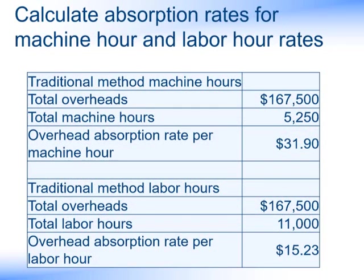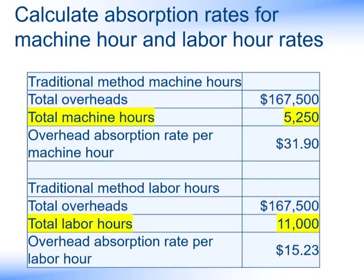Let's calculate our absorption rates using machine hours and labour hours. We take our total overheads for both cases — machine hours and labour hours — and in each instance we divide by the total machine hours or the total labour hours. This then gives us our overhead absorption rate per machine hour and the overhead absorption rate per labour hour.